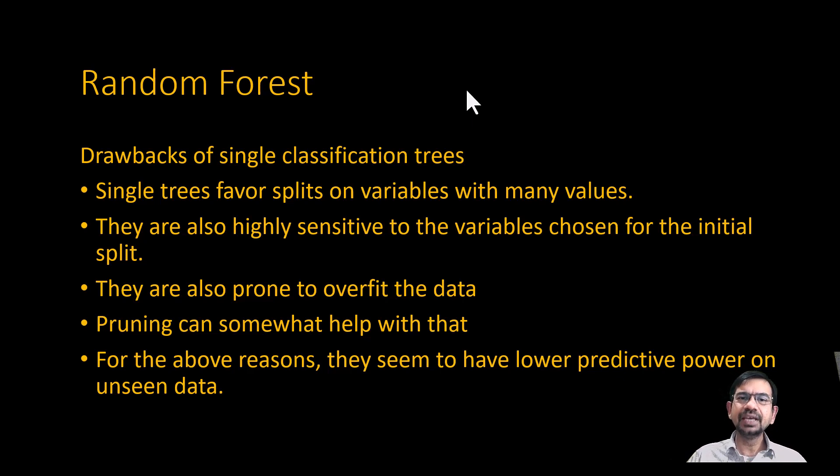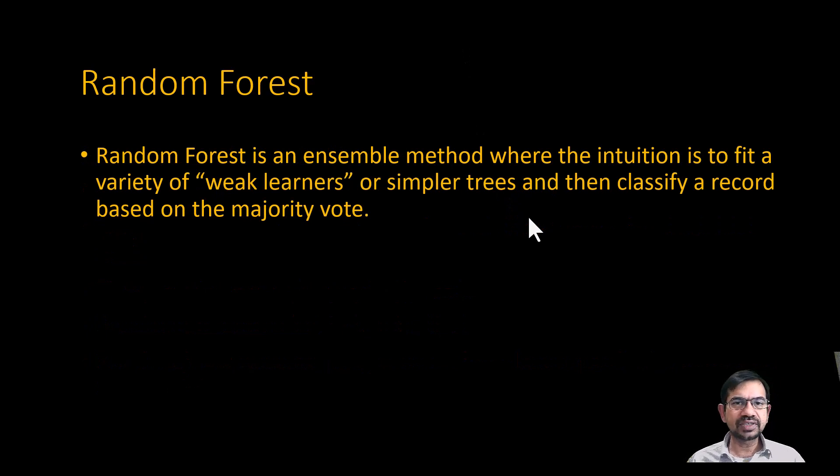The next step in progression of classification was to use the wisdom of the crowds, or ensemble methods. Random forests are a set of ensemble methods where the intuition is to build several trees, let them fully grow but choose specific variables at each split, and then pool or combine these trees to classify an outcome into one of the categories that it belongs to.